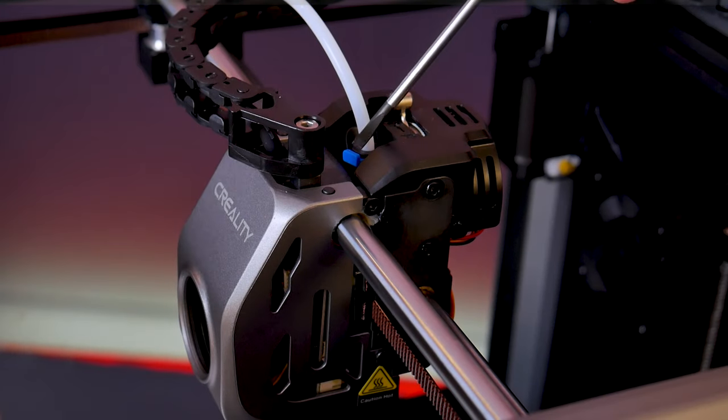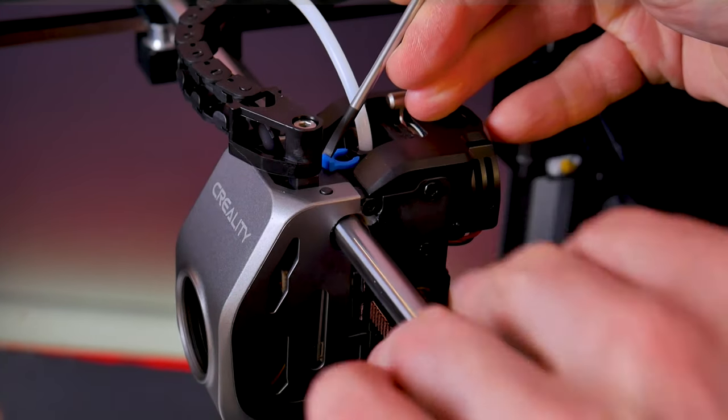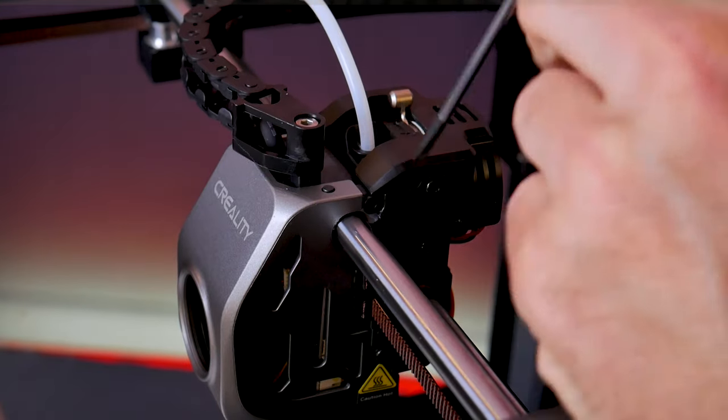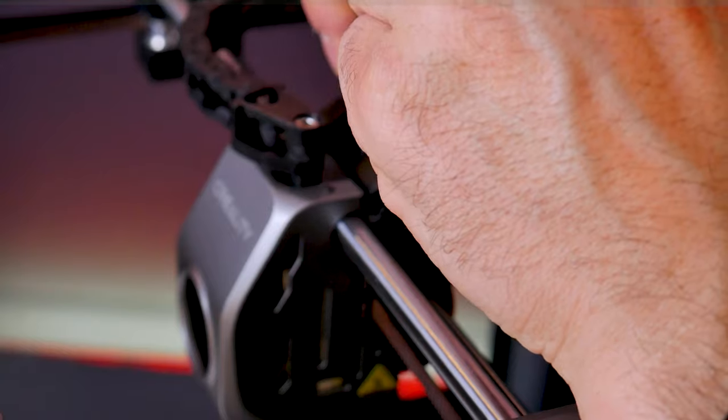Now if you do happen to jam up your extruder, I'll show you how to disassemble it here and unclog it. First you'll start by removing the PTFE retaining clip and then remove your PTFE tube.